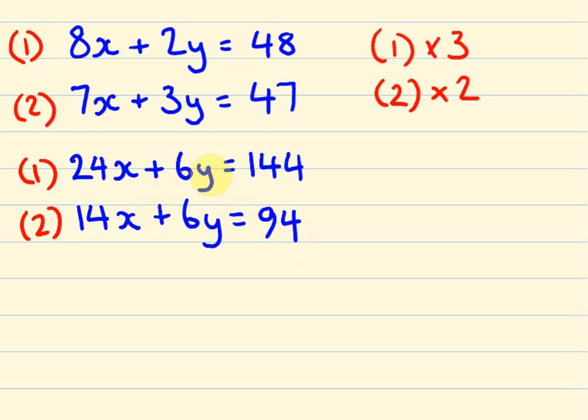So we're going to be able to take one equation from the other now because these are the same. I'm just going to directly take one away. Okay, so this take away this is 10X. This take away this, we cancel each other out. 144 take away 94, we get the answer of 50. So 10X equals 50. Therefore, X equals, not 10, I almost made a mistake there. X equals 5.